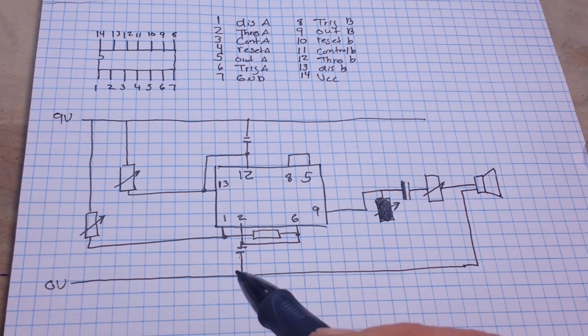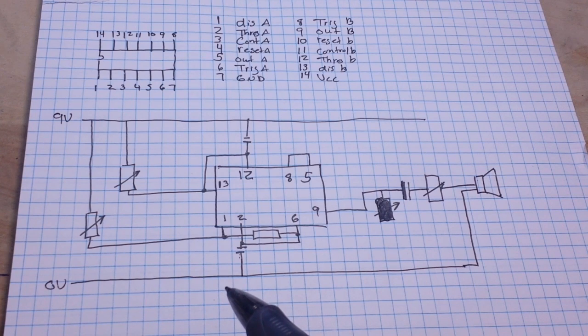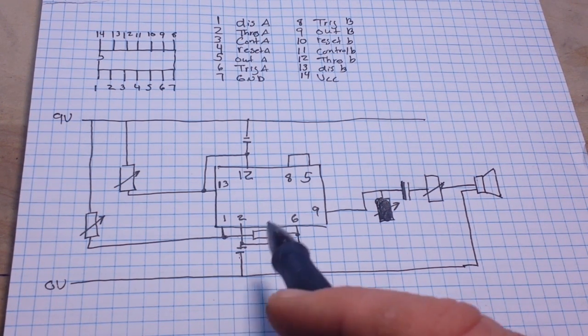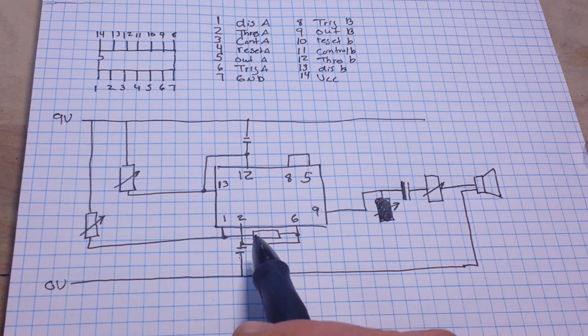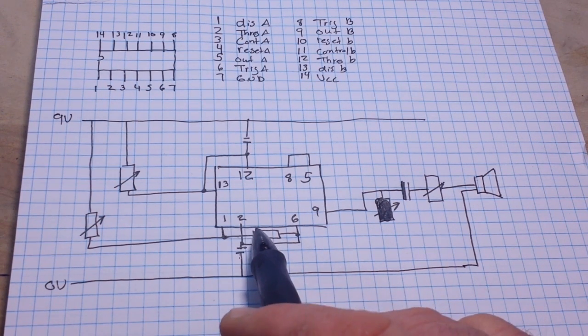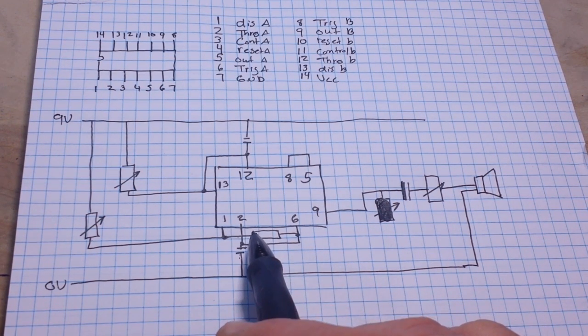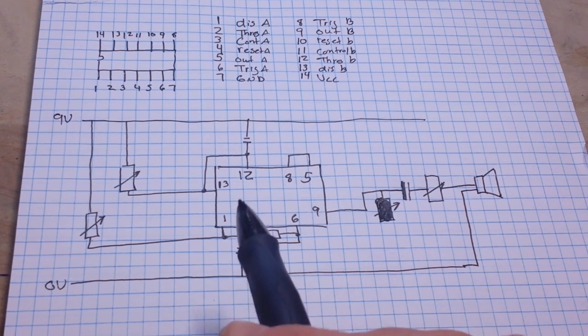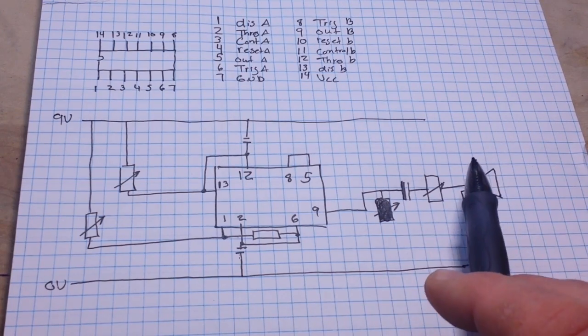Now, what it does is it produces an astable square wave oscillator, and that's coming out of the first 555 timer, which is the low-number pins. And that goes through a stable oscillator that will control the width of the pulse.